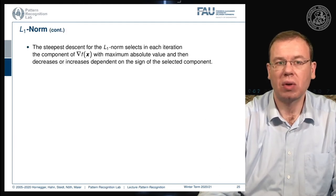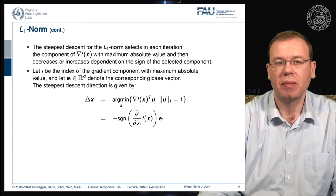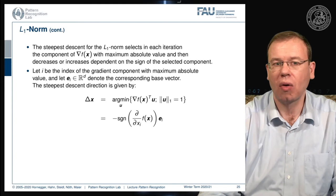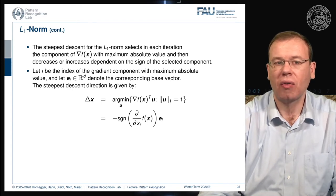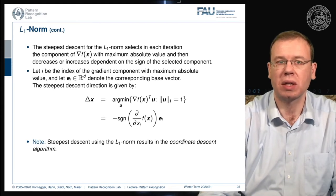So the steepest descent for the L1 norm selects in each iteration the component of the gradient with the maximum absolute value, then moves in that direction according to the sign of that component. If i is the index of the gradient component with maximum absolute value, the update direction is simply minus the sign of the partial derivative with respect to that coordinate. This means steepest gradient descent using the L1 norm results in coordinate descent.